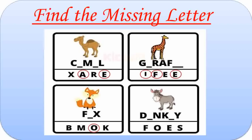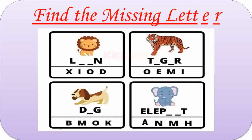Here missing letters are O and E. D-O-N-K-E-Y. Donkey. Here again are some animals. First one is Lion. Missing letters are I and O. L-I-O-N. Lion. Here missing letters are I, O and E. The word becomes T-I-G-E-R. Tiger.